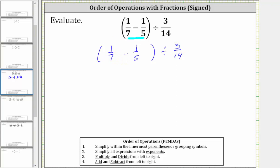And since 7 times 5 is 35, we multiply the numerator and denominator of 1/7 by 5. And since 5 times 7 is 35, we multiply the numerator and denominator of 1/5 by 7.